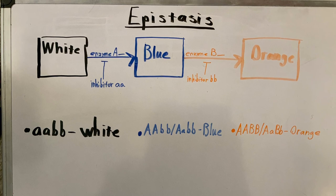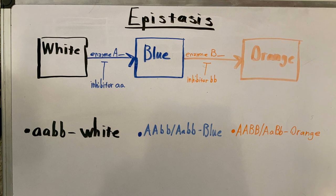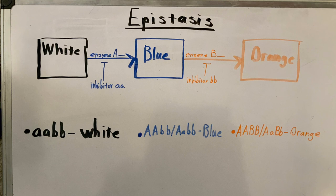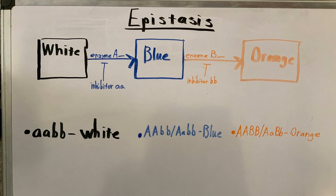Say we had an exotic dog: if it has a copy of the dominant A allele, it will be blue. Or if it also has a copy of the dominant A allele and the dominant B allele, it will be orange. If the dog has neither a dominant A nor dominant B allele, it will just be white. The dog's exotic coat color is controlled by inhibitor genes at each junction between each color.